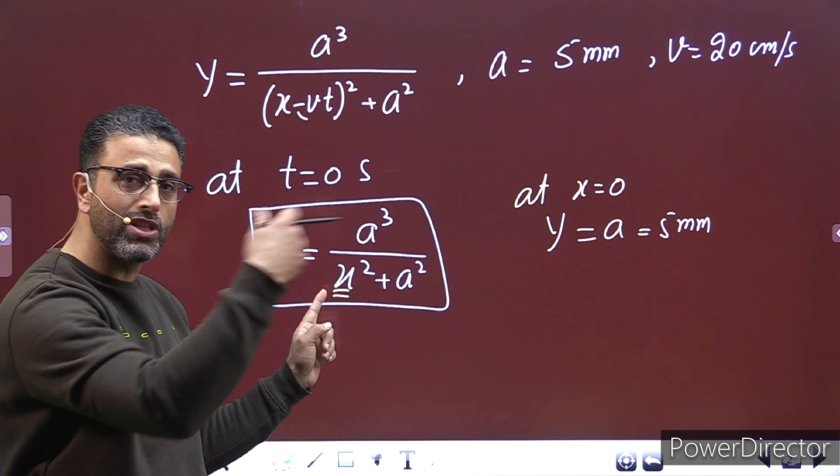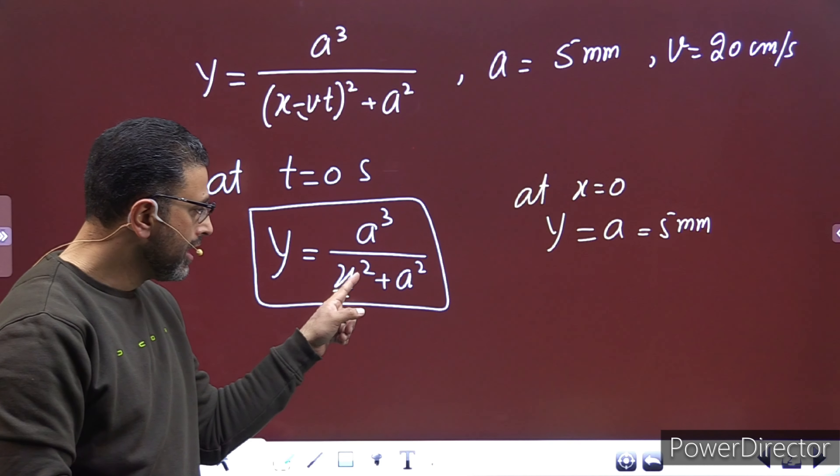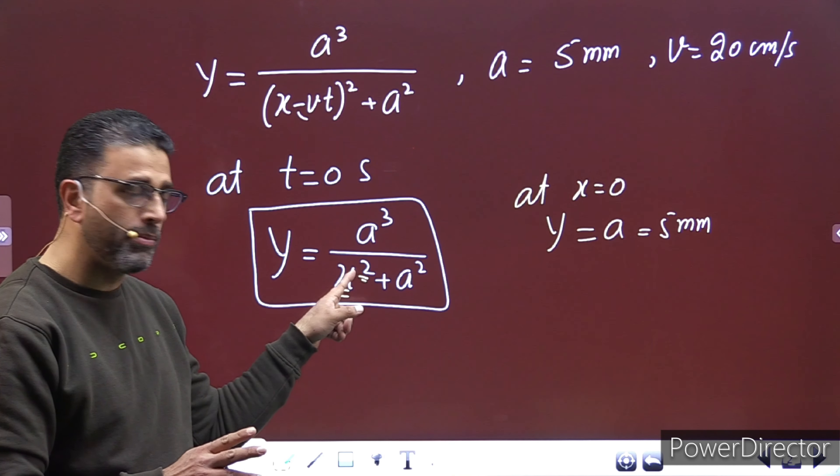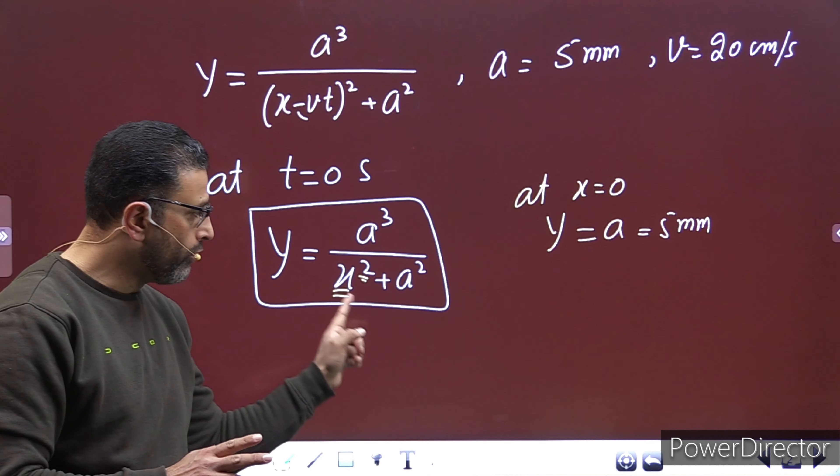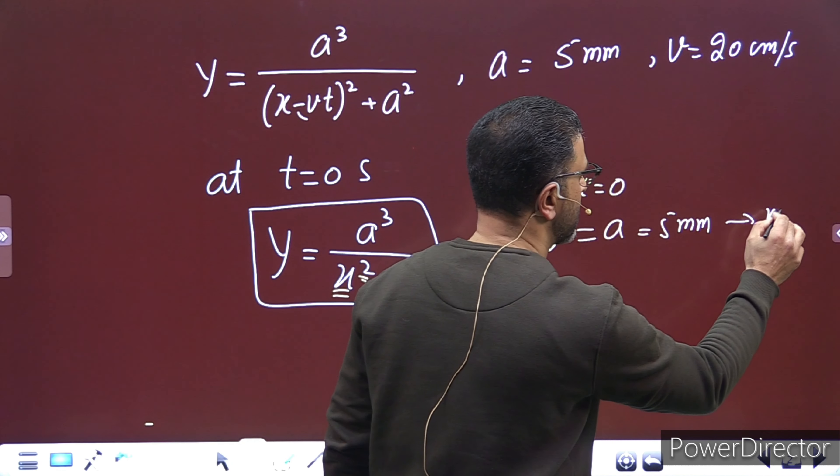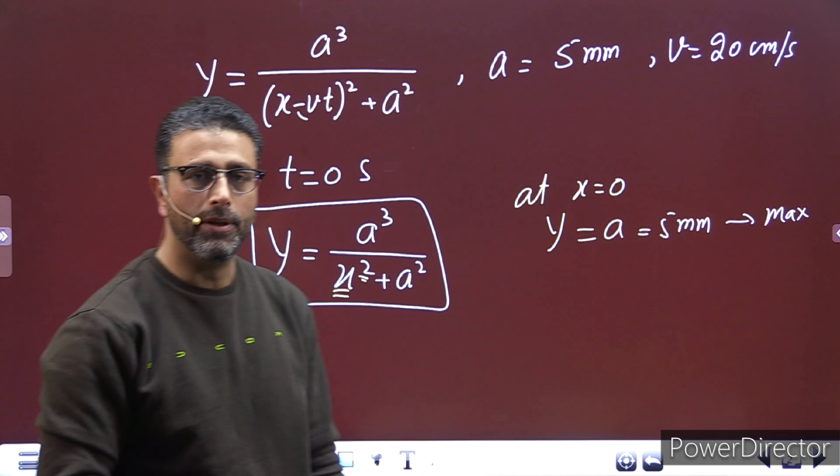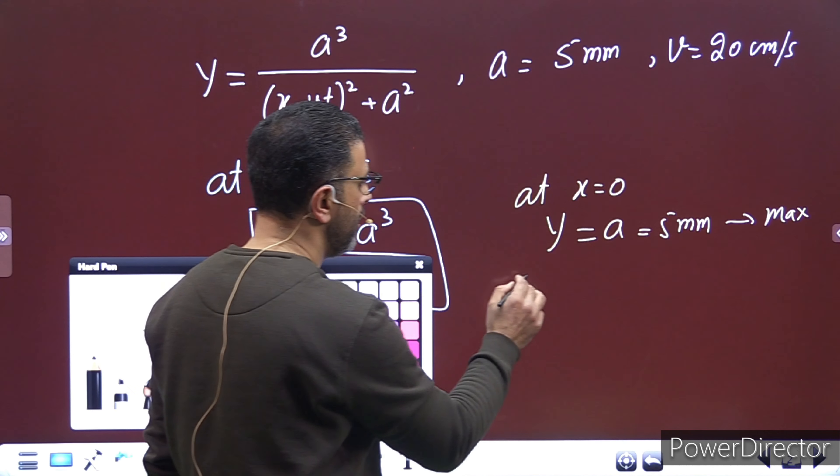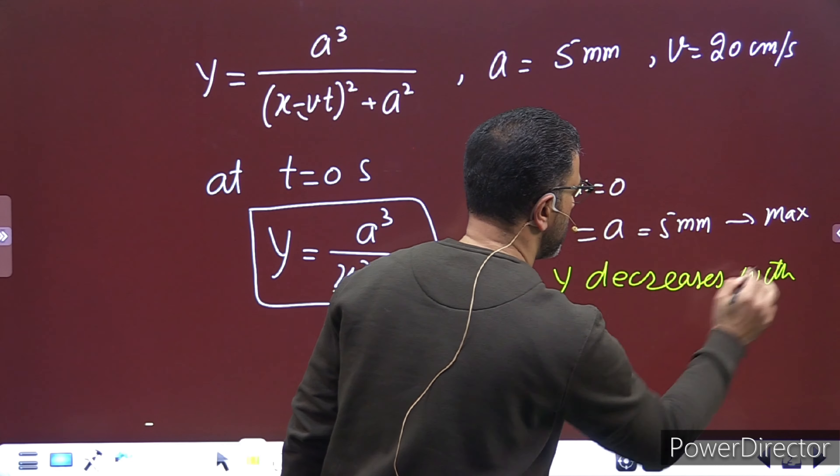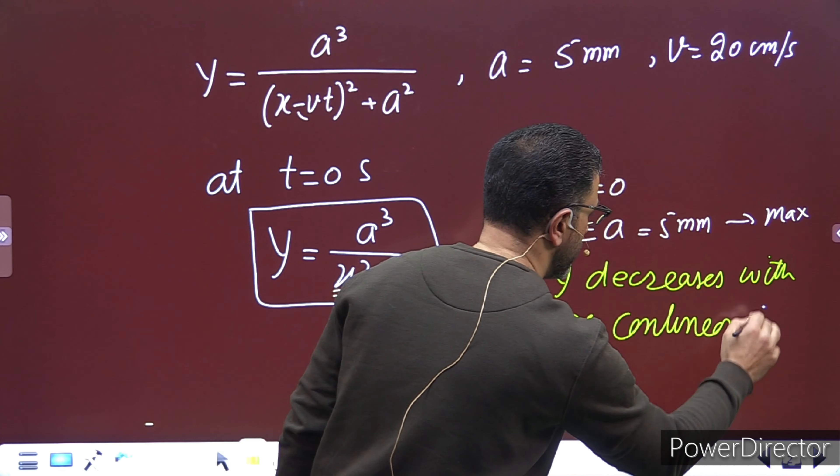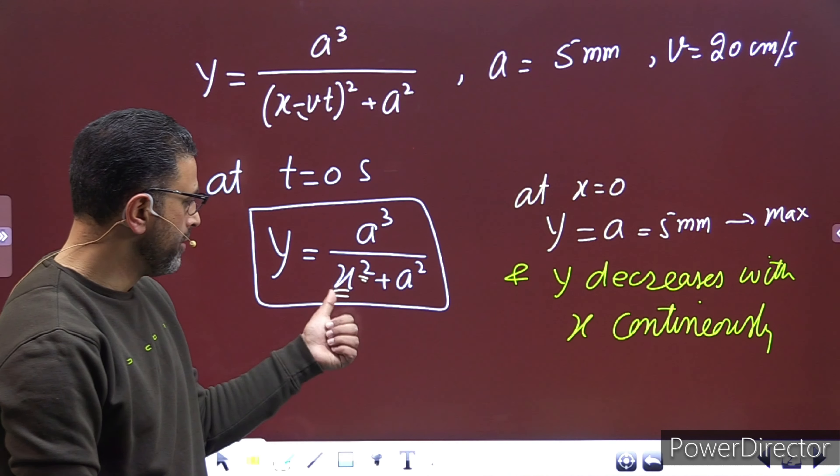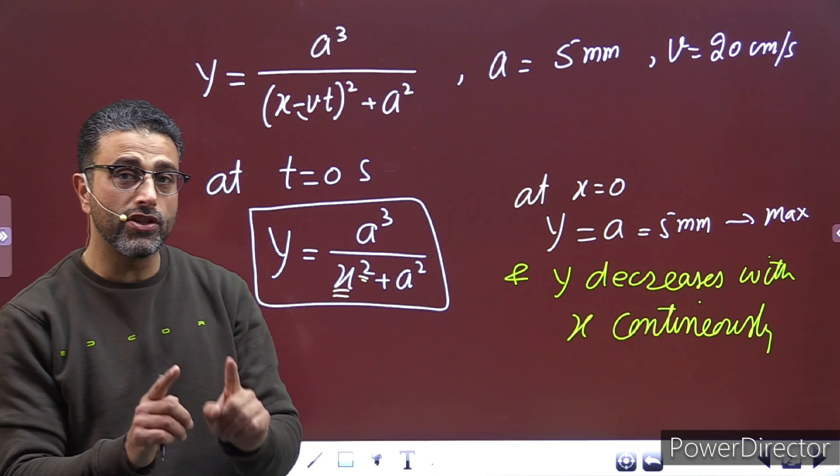Look back at the equation again. These two are constant, this is also constant, only x is varying. The only thing that changes is this x. And x is in the denominator, so whether you increase x on the positive side or increase it on the negative side, there is square here. So x square will increase. Whether x is positive or negative, it won't make any difference because x is squared. So the denominator will increase, and y will only decrease.